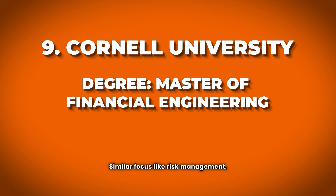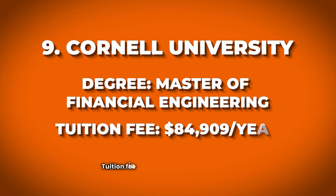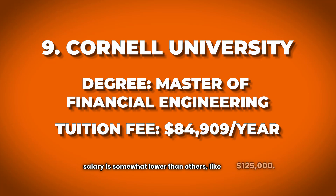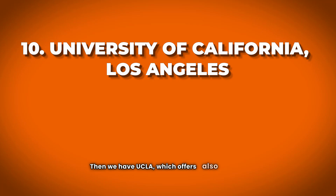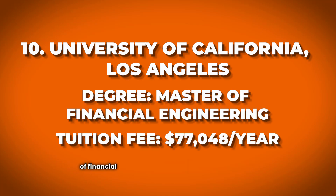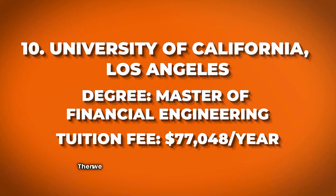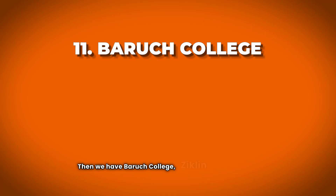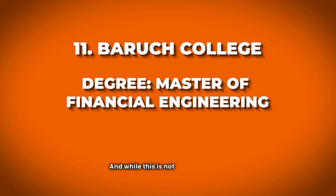Number nine is Cornell University with a Masters of Financial Engineering, focusing on risk management, optimization, and data science. Tuition is around $85,000 per year, and average salary is around $125,000. Number ten is UCLA, also offering a Masters of Financial Engineering with a similar profile.